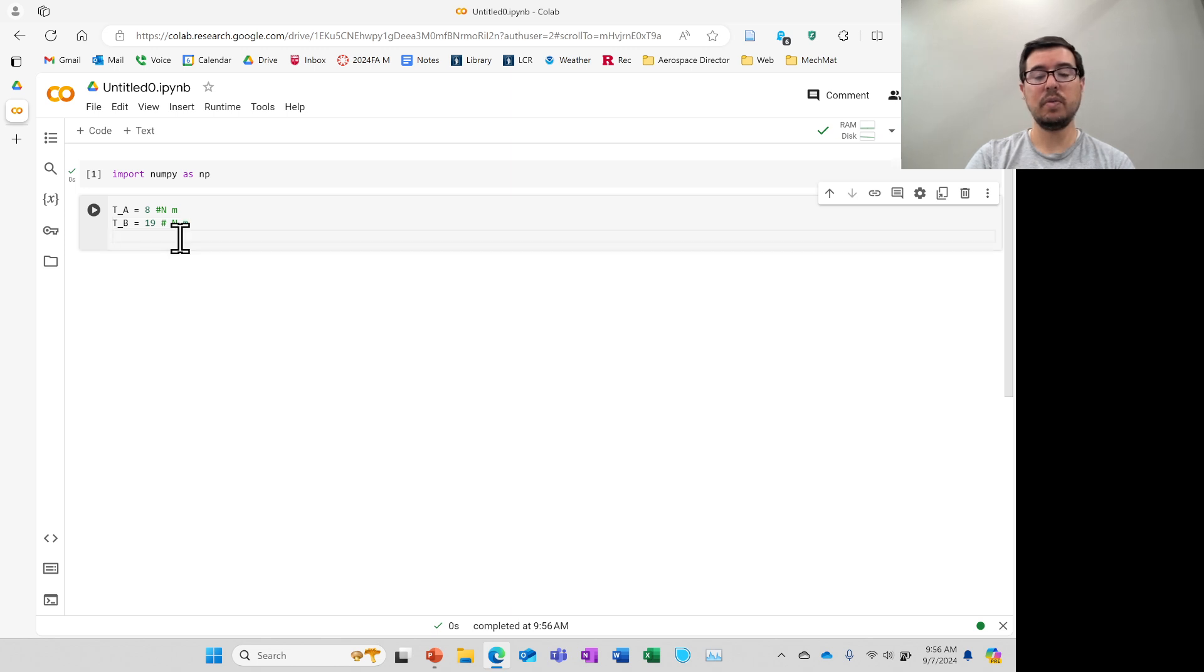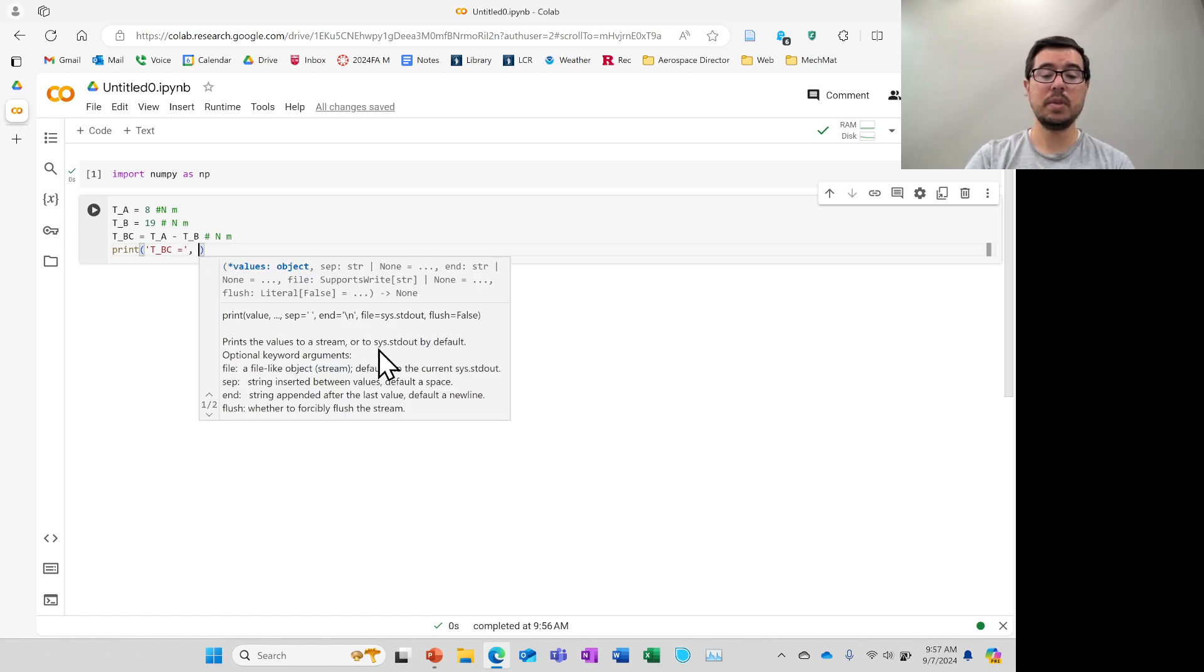Okay and then we'll have TBC is equal to TA minus TB. And you're like why are we doing this? Again this is just to give us a little more experience in how to write these expressions and solve them in Python.